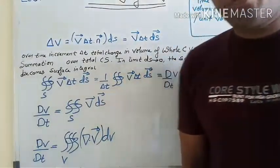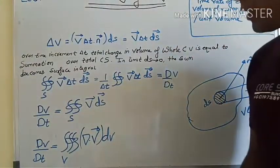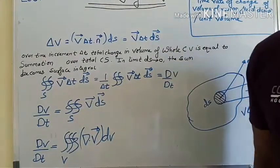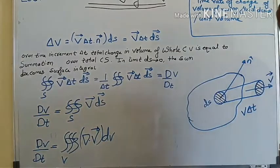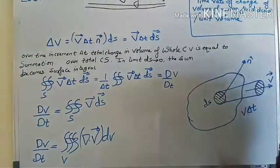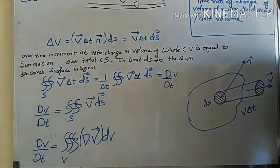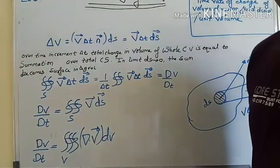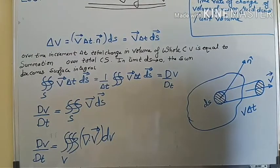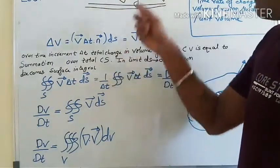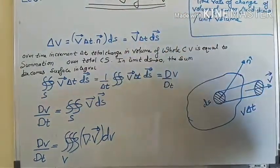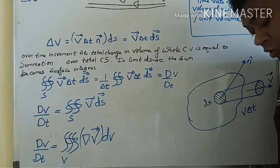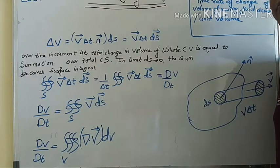Welcome to Mac Forum. Today we are going to discuss the meaning of the term Del dot V. Del dot V is termed as a divergence. We are considering the case in which a fluid particle is moving, and by considering that case we have to derive what is the value of Del dot V — what exactly the divergence is.